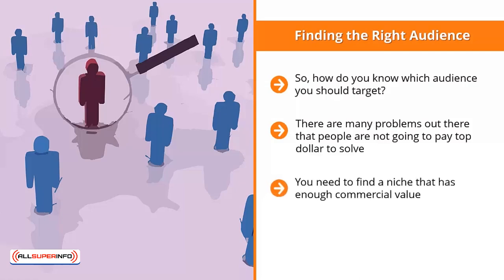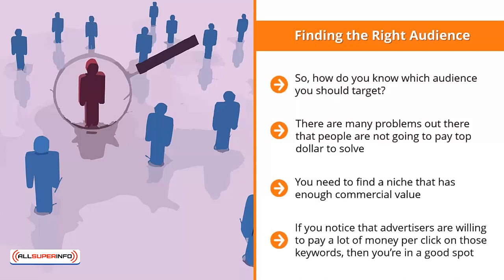You need to find a niche that has enough commercial value. One way to estimate this is to use Google AdWords Keyword Planner and do cost-per-click research on keywords related to your niche. If you notice that advertisers are willing to pay a lot of money per click on those keywords, then you are in a good spot. Chances are, there is enough commercial demand for that niche.